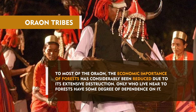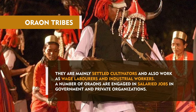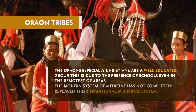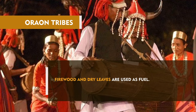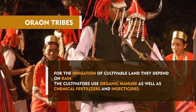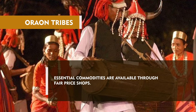To most of the Oran, the economic importance of forests has considerably been reduced due to extensive destruction. Only those who live near forests have some degree of dependence on it. They are mainly settled cultivators and also work as wage laborers and industrial workers. A number of Orans are engaged in salaried jobs in government and private organizations. The Orans, especially Christians, are a well-educated group. This is due to the presence of schools even in the remotest of areas. The modern system of medicine has not completely replaced the traditional medicinal system. Their attitude towards family planning is not favorable. Firewood and dry leaves are used as fuel. For irrigation of cultivable land they depend on rain. The cultivators use organic manure as well as chemical fertilizers and insecticides. Essential commodities are available through fair price shops.